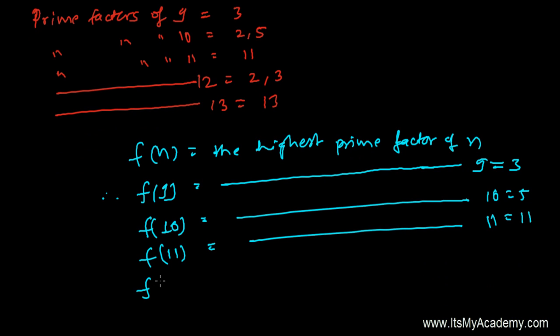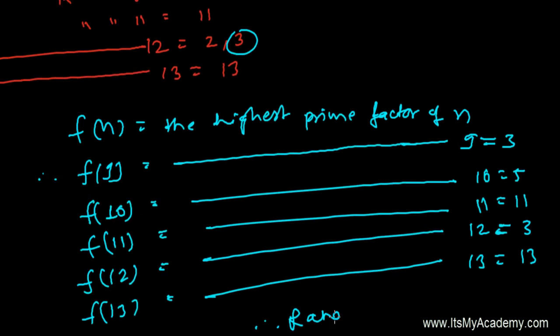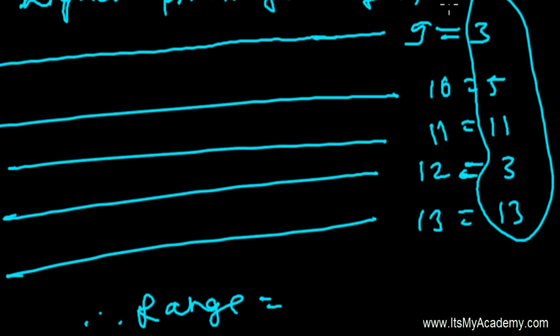The highest prime factor of 12 is 3. And for 13, the highest prime factor of 13 is 13 itself. Therefore, I can now easily identify the range by watching these values.